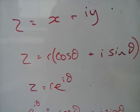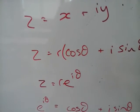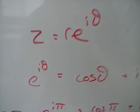Euler's theorem tells us that this is equivalent to that. Therefore I can now write e to the i theta equals cos theta plus i sine theta.